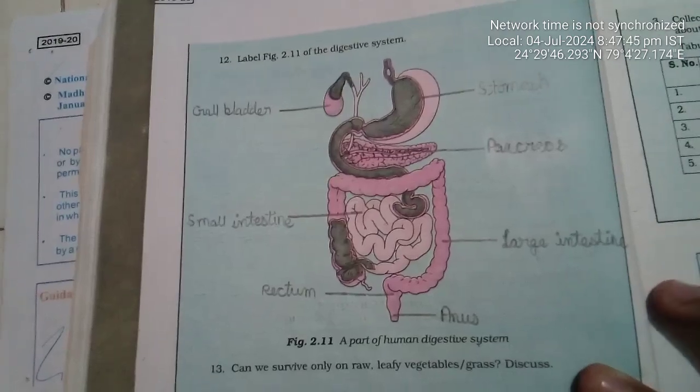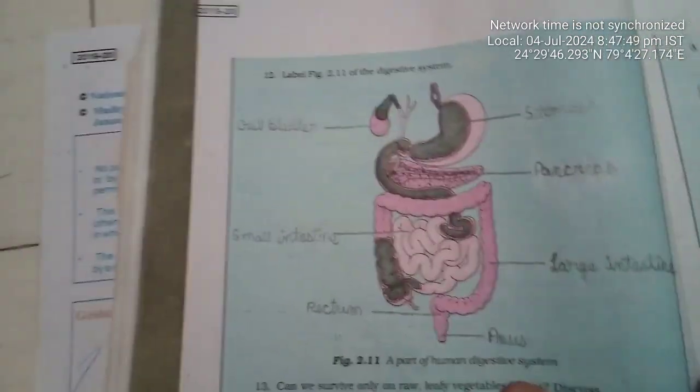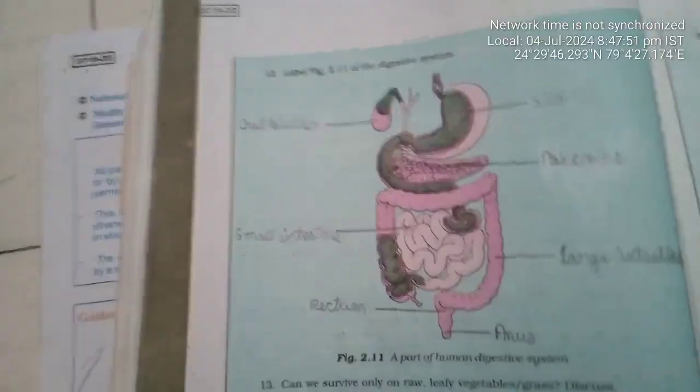Digestive diagram answer is: Stomach, Pancreas, Large Intestine, Anus, Rectum, Small Intestine, Gallbladder.